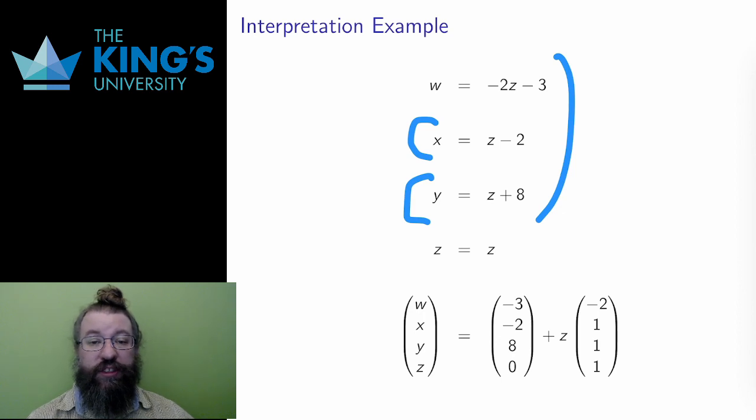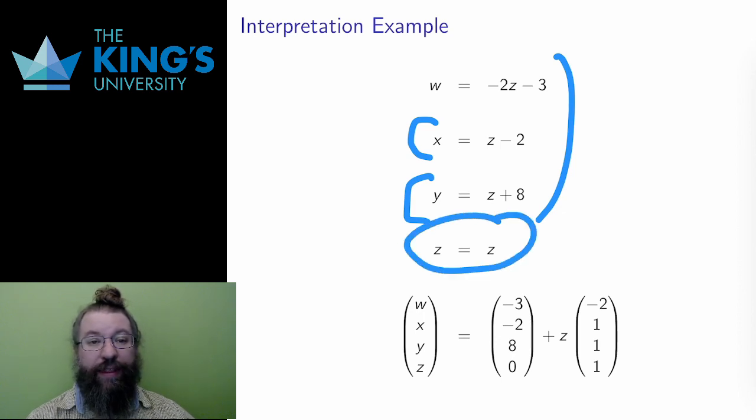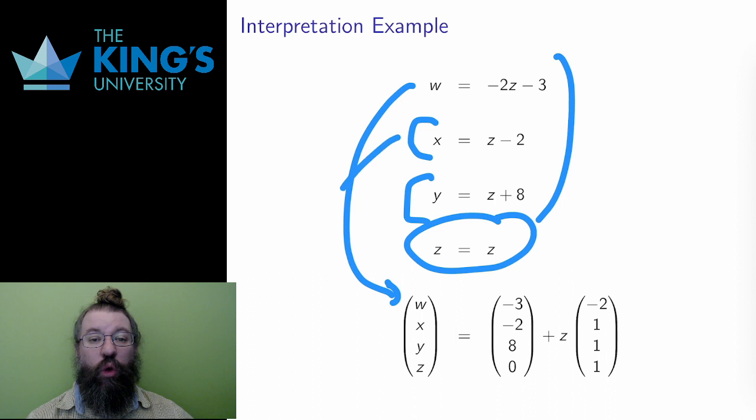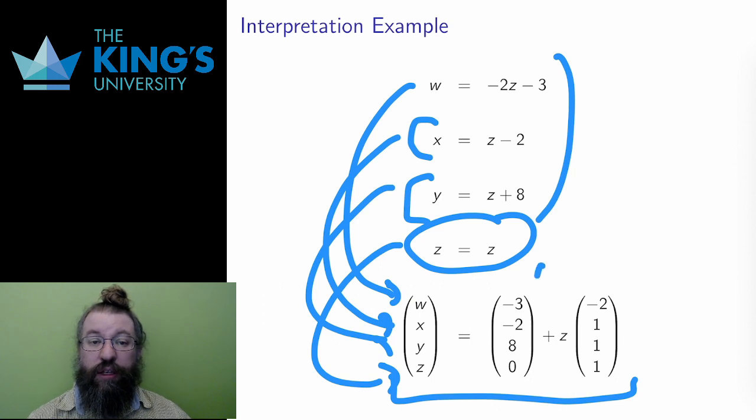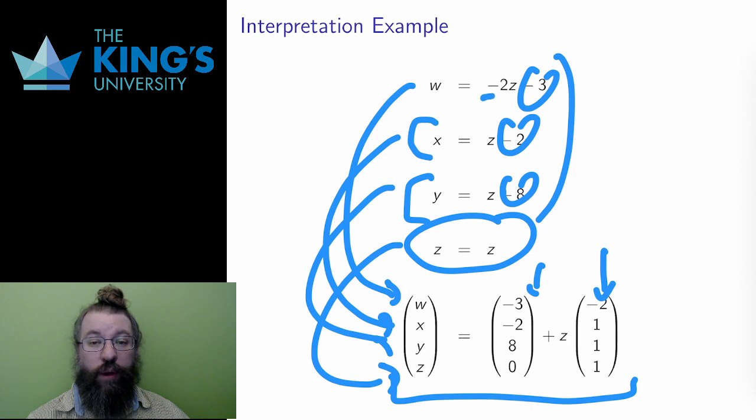I can add in the trivial equation z equals z as well, and then I can translate this into vector notation by writing w in the first spot, x in the second, y in the third, and z in the fourth, and I get this vector equation. The solution, the vector w, x, y, z, is equal to a fixed vector, negative three, negative two, eight, zero, plus any multiple of negative two, one, one, one. This is the solution space as an affine span, offset span. In this case, it is an affine line.